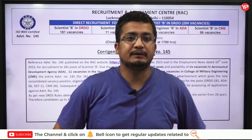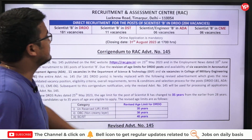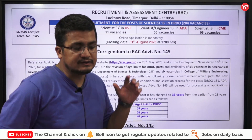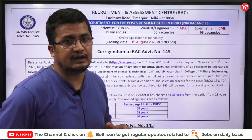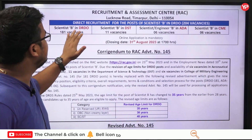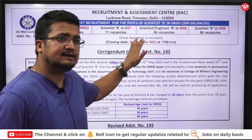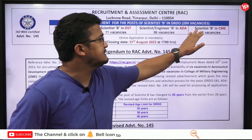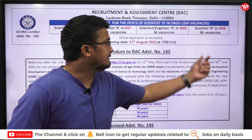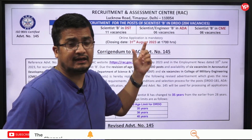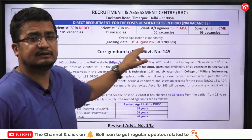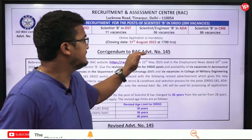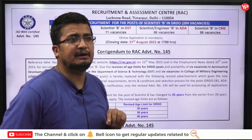You can see behind me — it's the Recruitment and Assessment Center (RAC), which recruits for DRDO. It covers Scientist B in DRDO, Scientist B in DST, Scientist Engineer B in ADA, and Scientist B in CME. The number of vacancies you can see alongside. The very important wake-up call: the last deadline is 31st August and online application is mandatory.